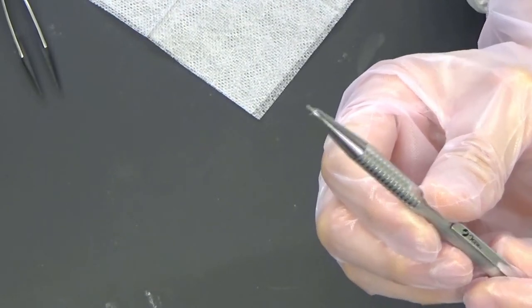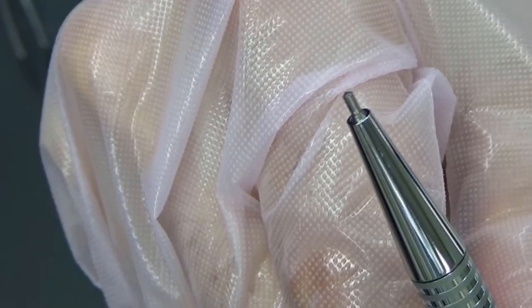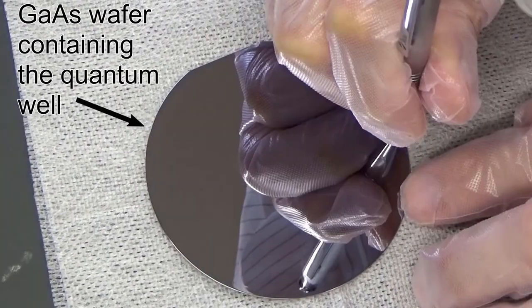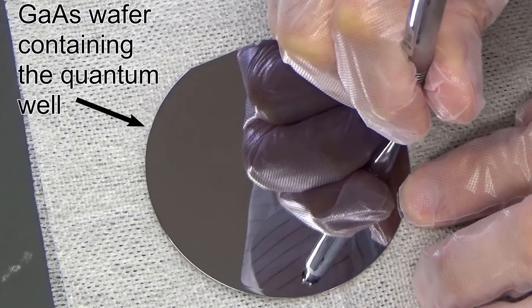We cut the wafer using a diamond-tipped scribing tool. First, we make a small scratch on the edge of the wafer.